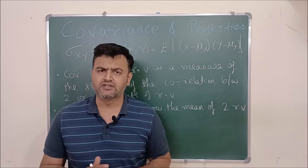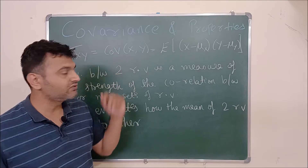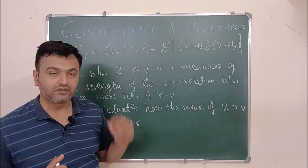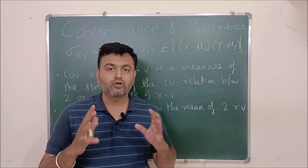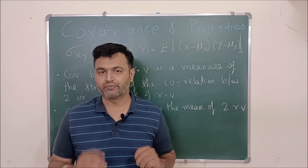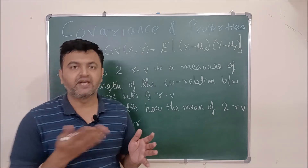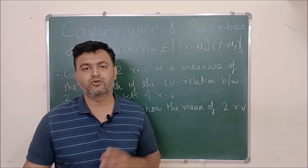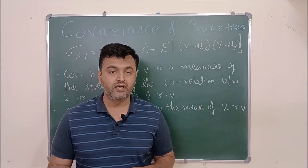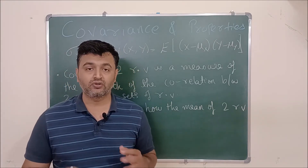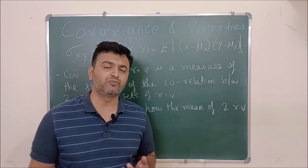Let me give you first a motivation, then we will go into the technicalities. Once you find the covariance of two random variables, you will get a number. Suppose if you have stock of two companies, say stock A and stock B. With the help of its earlier behavior or patterns, you have the data and from there you find their covariance. If the covariance comes out to be positive, that means those two stocks are directly proportional.